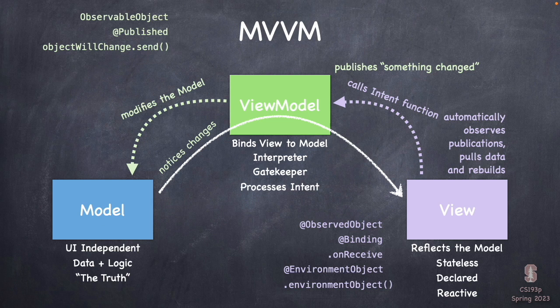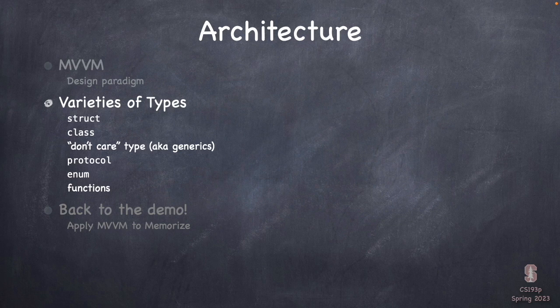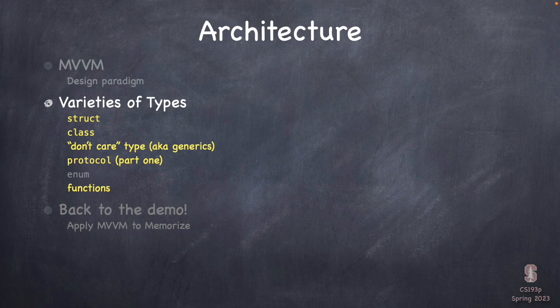Our stateless UI is reflecting the new state of the model after the intent we expressed. And that is the entirety of MVVM. So let's go to the next step in architecture: the type system. Every language — it's so important to understand the fundamental types involved, because everything the language can do really flows out of those fundamental types.